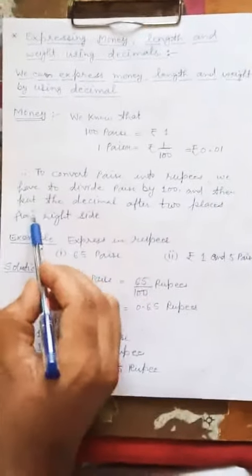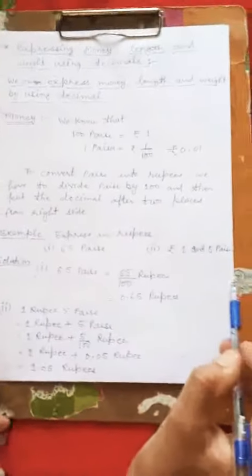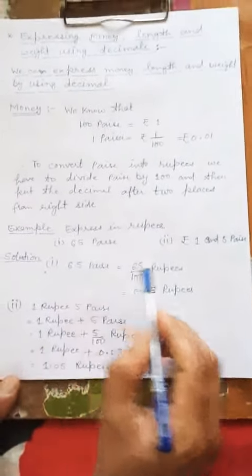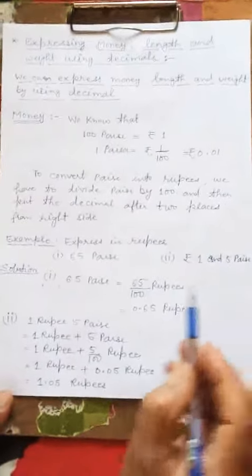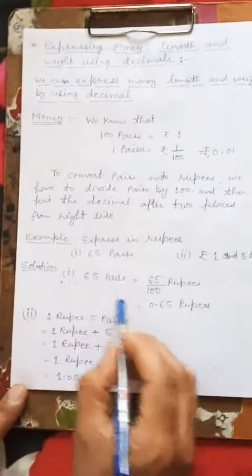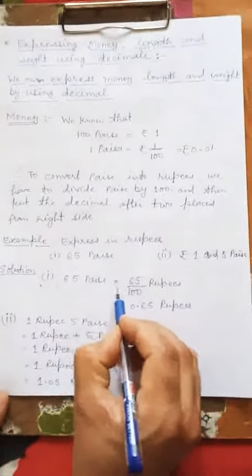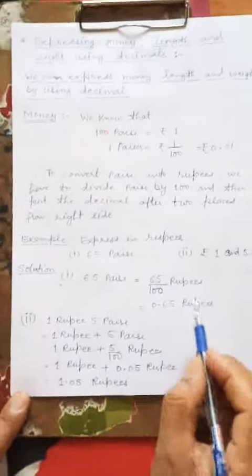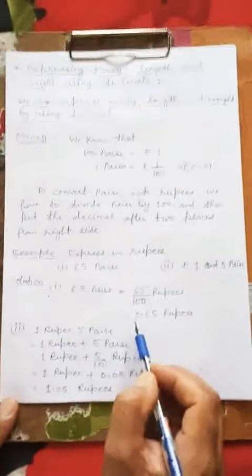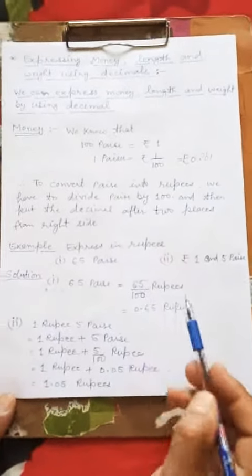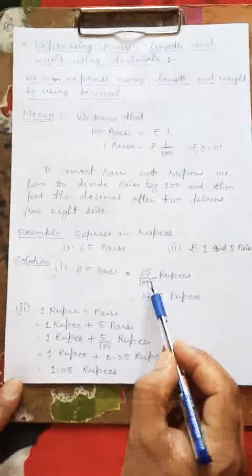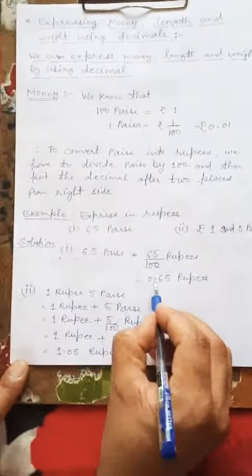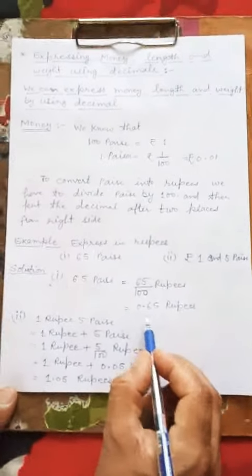And then put the decimal after two places from the right side. Example: express in rupees. The first part is 65 paisa. 65 paisa equals 65/100 rupees. There are two zeros in the denominator, so we put the decimal after two places, counting from the right side: 1 place, 2 places. So the decimal goes after two places and it becomes 0.65 rupees.